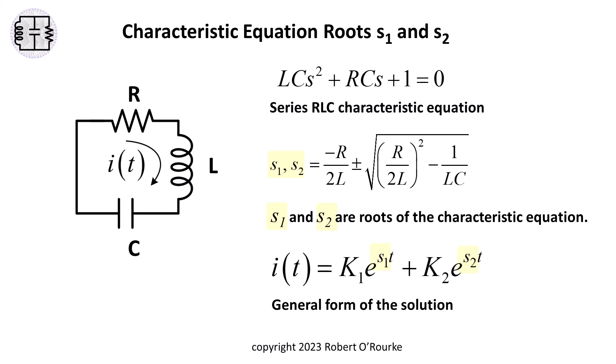Solving the characteristic equation for S using the quadratic formula, we get equations for S1 and S2, the roots of the characteristic equation. Because there are two roots, the general form of the differential equation has two exponential terms.